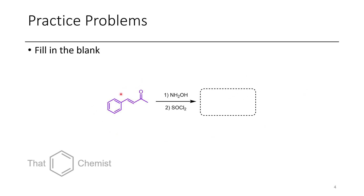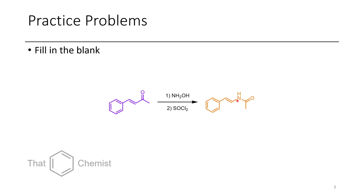In the next problem we have to fill in the blank. Again we have hydroxylamine, which forms an oxime with this alpha-beta unsaturated ketone. In the presence of thionyl chloride we can have a 1,2-shift where we end up getting this N-acetyl vinyl amine as our product.